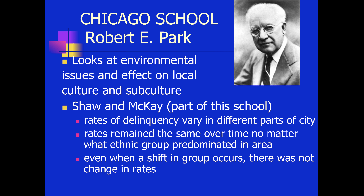Clifford Shaw and Henry McKay were part of the Chicago School, and they specifically were studying delinquency rates in different parts of the city. What they found was that the rates remained the same over time. This was important because immigration during the 19th century established that different groups moved into different areas at different points in time. Once a new ethnic group became established in the country, that group would gain enough economic advantage and employment stability to move away from the impoverished area they first moved to, and then a new group would come to that area.